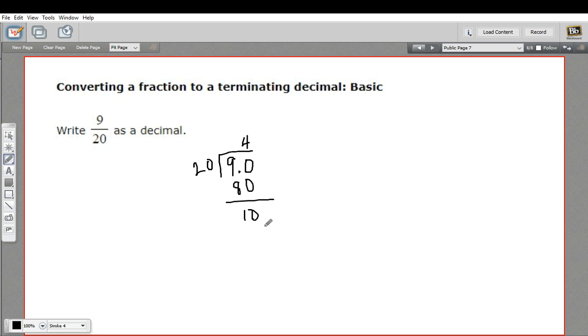Now again, there are no 20s that fit into 10, so I'm just going to add another 0 and bring it down. How many 20s in 100? There are 5. 5 times 20 is 100. So that's a remainder of 0. And now I just put my decimal point in where it goes.